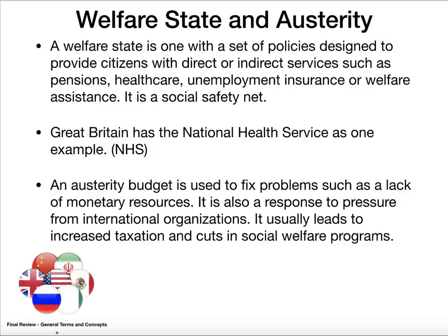Welfare state and austerity. A welfare state is when you have policies designed to help people through the government — healthcare in Great Britain through the National Health Service is an example. Unemployment insurance, pensions, and social security are all part of the welfare state, sometimes called a social safety net. If a government is struggling to pay its bills, it may go on an austerity budget, spending the bare minimum required. Under austerity, you might have to increase taxes to bring in more revenue and cut social welfare programs.